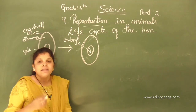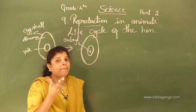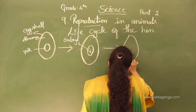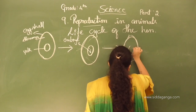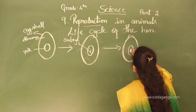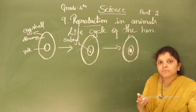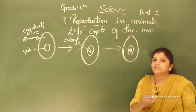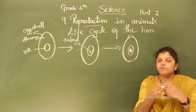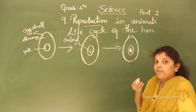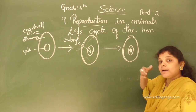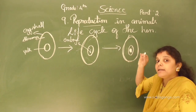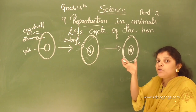This embryo will be developed into a baby. It is very essential that an embryo needs food to grow. Therefore they feed the embryo — the yolk feeds the embryo as food. So the yolk is the food source, and the embryo is the developing baby inside the egg.